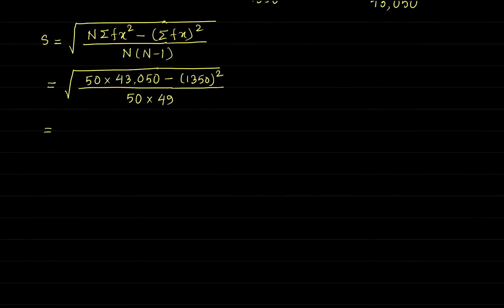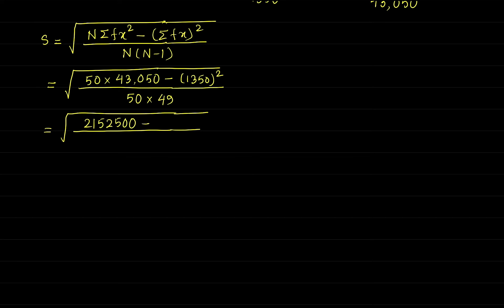Now simplify this. After simplifying, the first value becomes 2,15,25,00, then minus 1,82,22,500. These are the two values. Then 50 into 49 equals 2450.